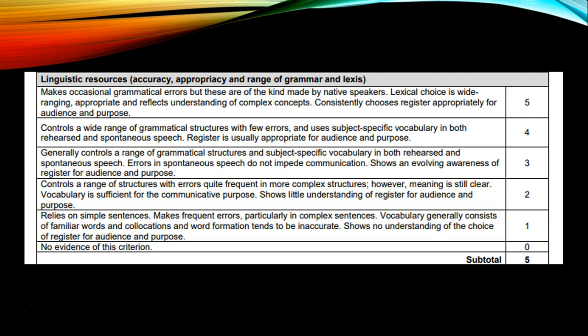The next criterion — criterion two for Part B — is linguistic resources. This is basically your vocabulary combined with your grammar. We're going to look at how appropriate and accurate your vocabulary is, and whether your grammar is correct. It counts for five marks in total. For you to get five, you have to make sure you do not make grammatical errors and your vocabulary is very appropriate and accurate.